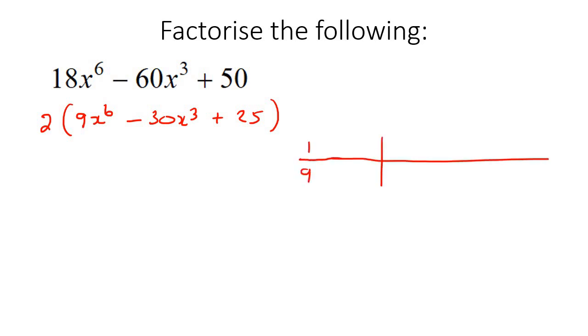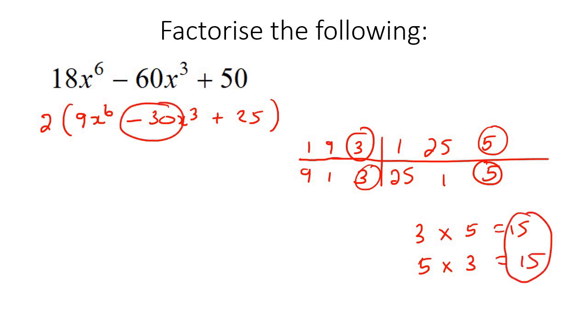So it would be 1 times 9, 9 times 1, and 3 times 3. And then for 25, it would be 1 times 25, 25 times 1, and then 5 times 5. And so now we just need to try and make the number negative 30. So we could make negative 30, let's see. Oh, here, 3 times 5, which is 15. And then this is 5 times 3, which is also 15. And then 15 and 15 would make negative 30. If you say negative 15, take away 15, that would give us negative 30.